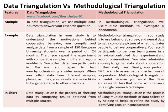You recruit participants to perform team games in a behavioral-controlled lab experiment and record observations. You also administer a survey to gather data about cooperation in their daily lives. Finally, you perform fMRI scans to assess neural mechanisms of cooperation. Methodological triangulation is useful because you avoid the flaws and research bias that come with reliance on a single research technique.